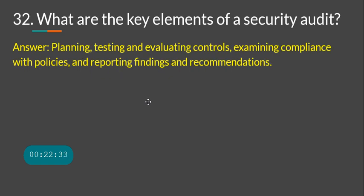What are the key elements of a security audit? Just collecting data is not enough — you must audit and act on it. Key elements include: planning, testing and evaluating controls, examining compliance with policies, and reporting findings and recommendations. Security audits can be internal or third-party, and may be driven by regulations such as SOC 2, GDPR, or NIST SP 800-53.